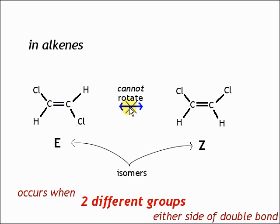It's fixed in its position, and therefore we end up with two different isomers occurring when you've got two different groups either side of the double bond. So there are two different groups here and two different groups there. And therefore, whether it's in this orientation or 180 degrees different means you've got two different isomers.